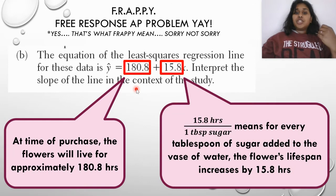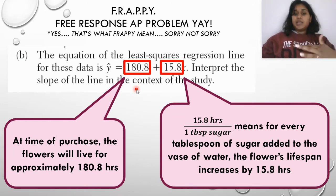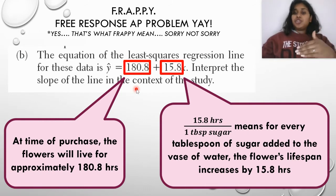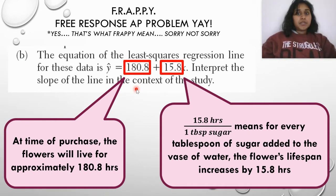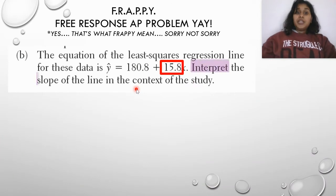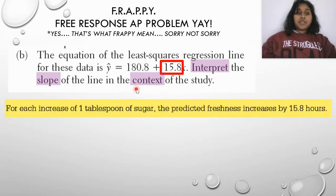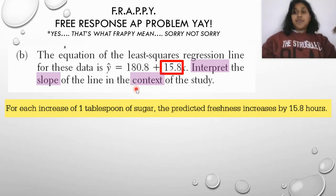The b-value, or the slope, is 15.8 hours per one tablespoon of sugar, because it's change in y over change in x. So that means for every tablespoon of sugar added to the vase of water, the flower's lifespan increases by 15.8 hours. We've interpreted the slope of the line in context of the study. For each increase of one tablespoon of sugar, the predicted freshness increases by 15.8 hours.